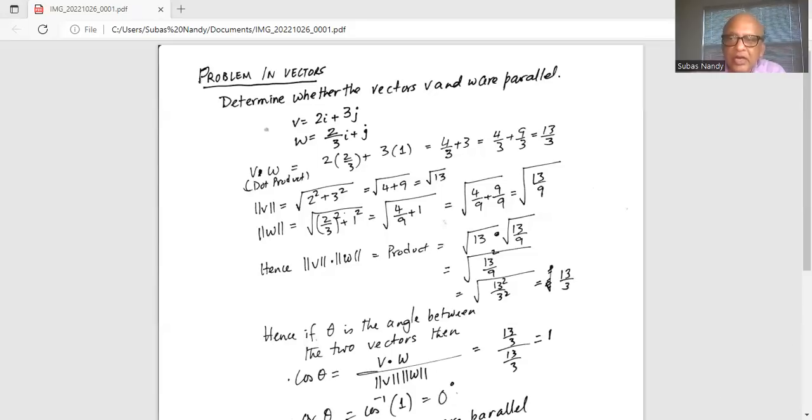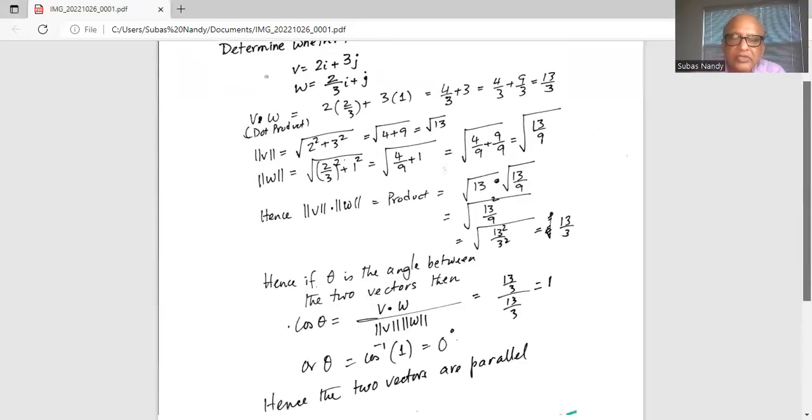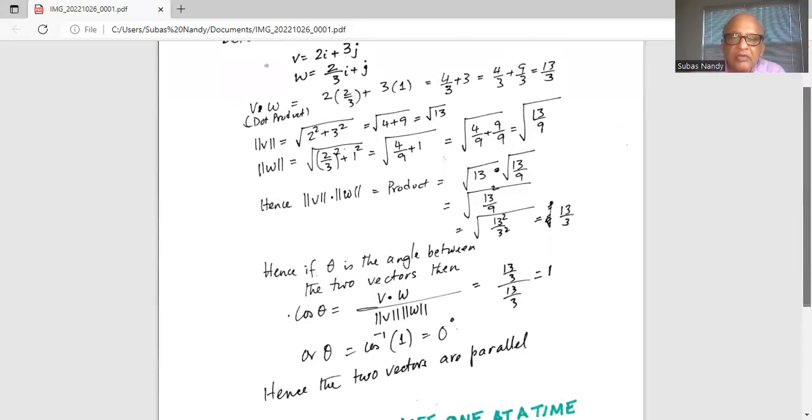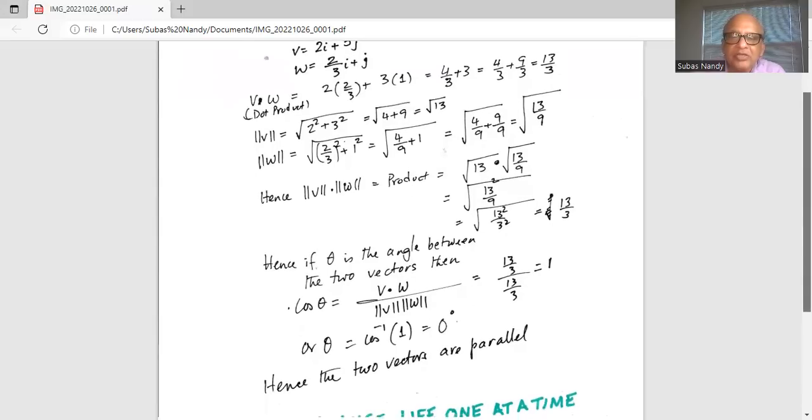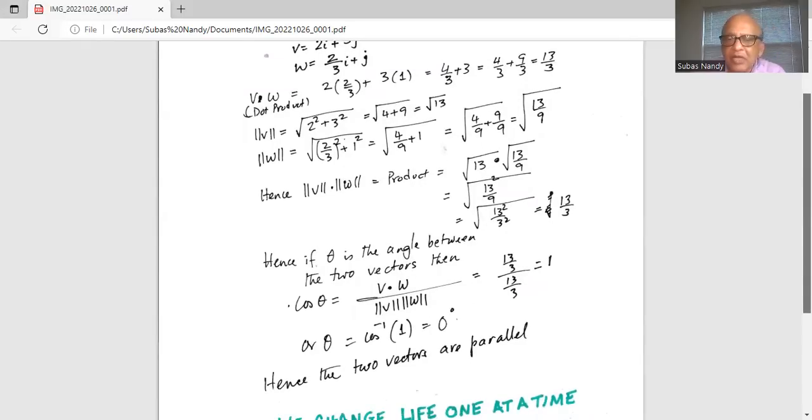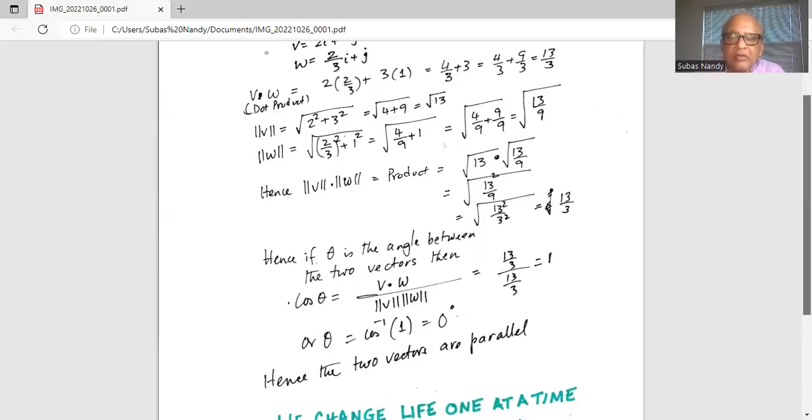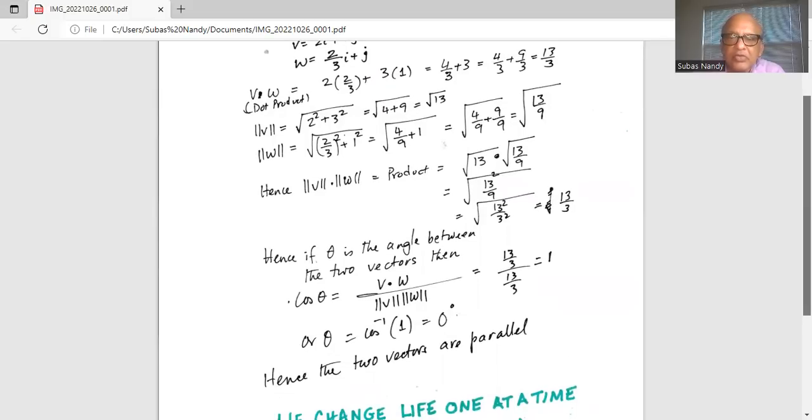Hence if theta is the angle between the two vectors, then cosine of theta is v dot w divided by magnitude of v multiplied by magnitude of w. So it is 13/3 divided by 13/3, which is 1.